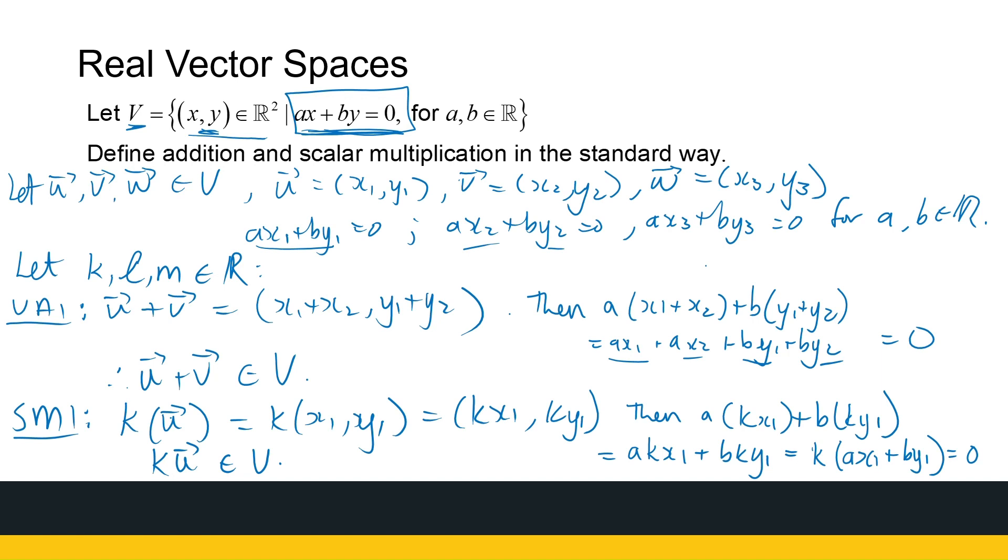So the set is closed under vector addition and scalar multiplication. You can go through all the other axioms, but you will see that this forms a vector space. The 0 vector is just going to be (0, 0). The negative is just going to be minus, minus. But you will have to check, does it fall into the set? So there's a bit of work to do going through all those axioms. But here's another example of a vector space.